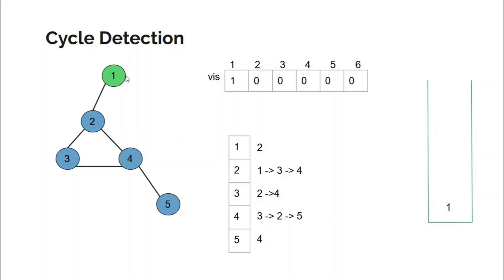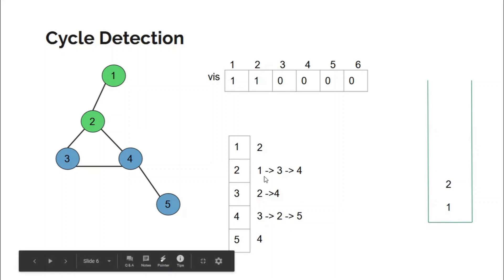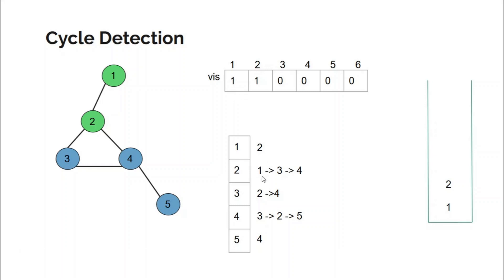In the adjacency list of one there is two, and two is not visited, so we make a DFS call to node two passing one as its parent. As soon as we reach node two we mark it visited. In the adjacency list of two we have one, and one is already visited, so we check whether this is a back edge — we check whether one is the parent of two. Since it is, this is not a back edge, and we continue.